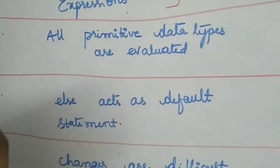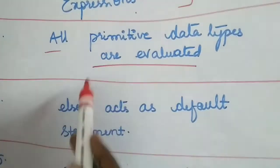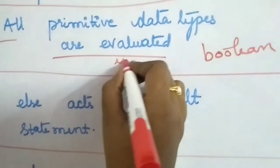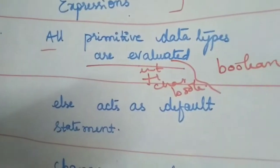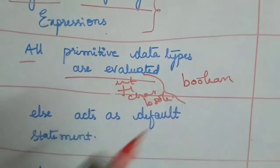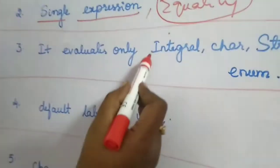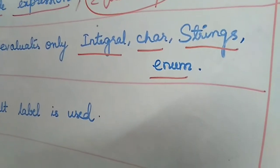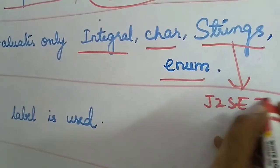The next difference is about primitive data types. All primitive data types are valid inside an if, but the outcome of the condition expression must be boolean. We can use integral types, floating types, char, and even boolean — all these types can be used in evaluation, but the final outcome must be boolean. For switch, the expressions should be integral types, char, String, or enum. Strings were added to switch statements in J2SE 7.